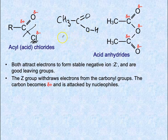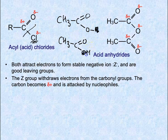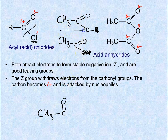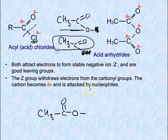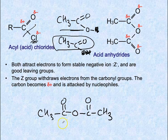An acid anhydride is simply two carboxylic acids joined together. For example, take two ethanoic acid molecules: knock off one hydrogen and one OH from each, eliminate water, and join the two together. That gives you the acid anhydride. You do not need to know the mechanism for the formation of acid anhydride at this stage.